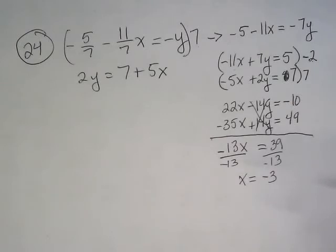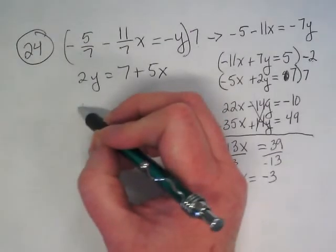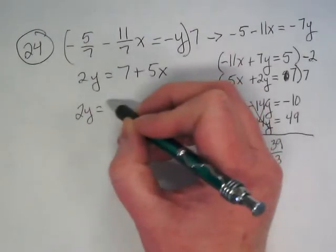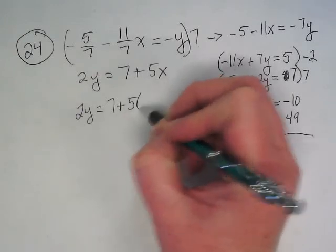And then we go back to our original equations. Which equation should we choose to plug the x into? I agree. Second. 2y equals 7 plus 5 times negative 3.